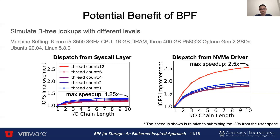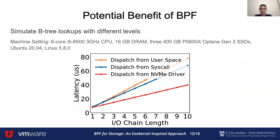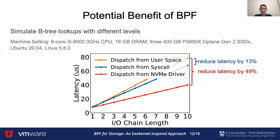The maximum speedup we can achieve is 2.5 in this case. We also examine the latency of dispatching from different layers. The x-axis shows the length of the IO chain, and the y-axis shows the latency of the entire lookup. Compared to dispatching from user space, dispatching from the syscall layer allows us to reduce the latency by 13%. As expected, dispatching from the NVMe driver gives us higher latency reduction, which is around 49%.